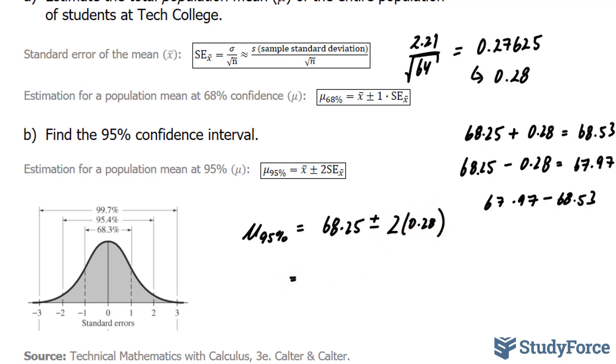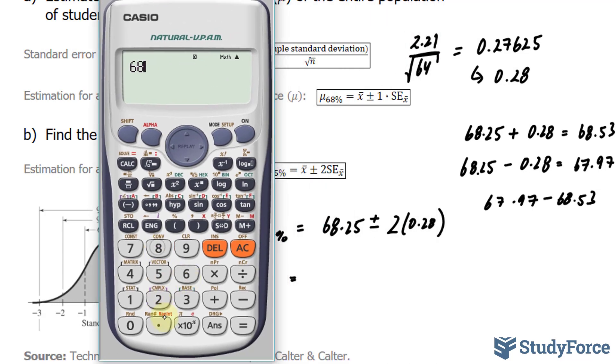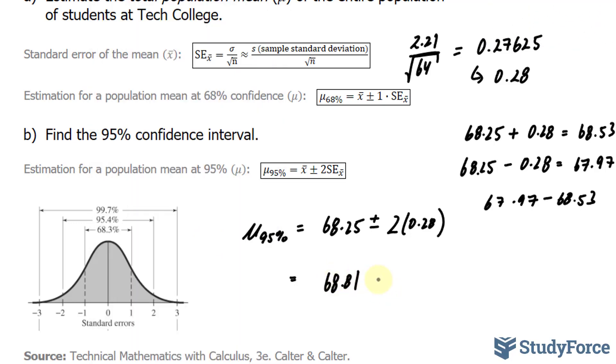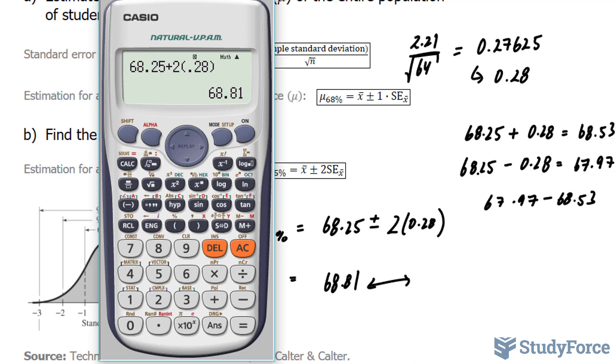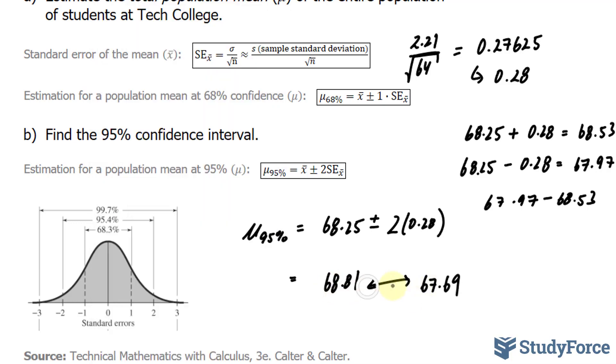Using my calculator, I have 68.25 plus 2 times 0.28. This gives me 68.81. That's going to be the upper range limit. And the lower range limit will be this minus, which is 67.69. So there's a 95% chance that the mean will fall within this range.